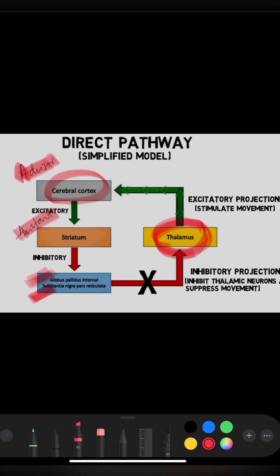This is the right time to make a move — that is simply the direct pathway. In short: the thalamus is the politician, and the right hand and left hand are globus pallidus internus and substantia nigra pars reticulata. They always inhibit the politician from doing unnecessary things until the right stimulus comes. When the cerebral cortex, the legal advisor, signals his assistant the striatum, it gives an inhibitory effect to the right and left hands so they keep shut and the thalamus can move — that's how movement happens. So the direct pathway is simply for having movement.